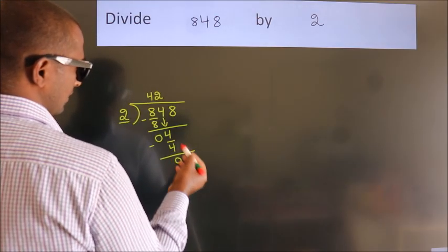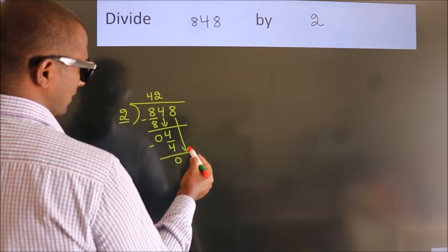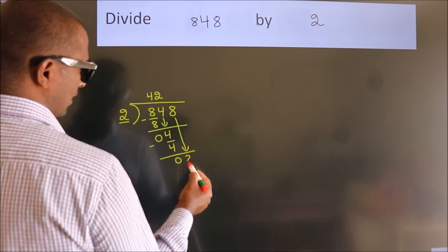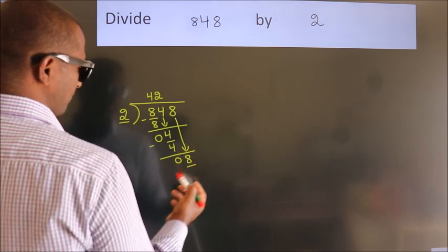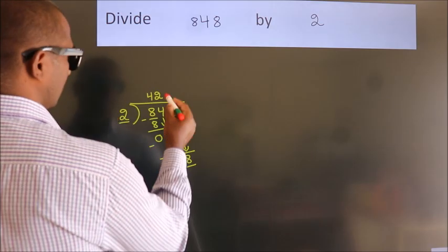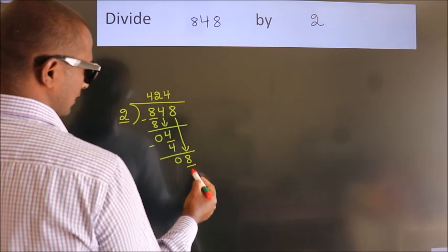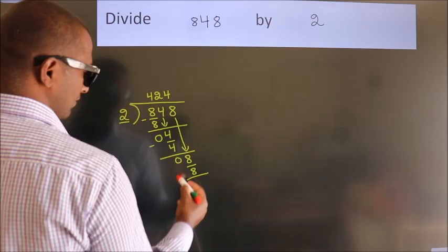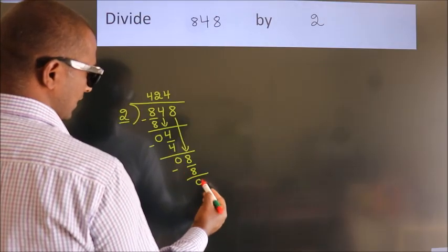After this, bring down the beside number, so 8 down, so 8. When do we get 8 in 2 table? 2 fours, 8. Now we subtract, we get 0.